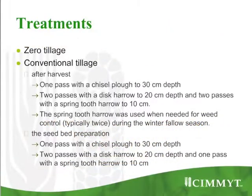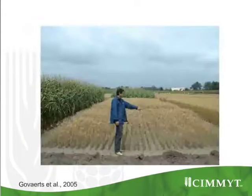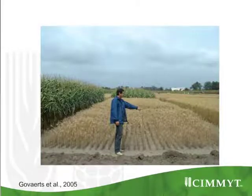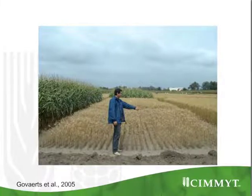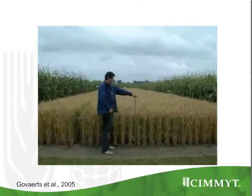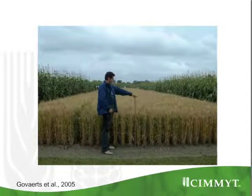I want to show you first the results we get for yield through some more visual pictures. You can see here this is a plot with zero till since 1991. If we go to the next one we can nicely see zero tillage with residue, and the picture was of course taken the same day.